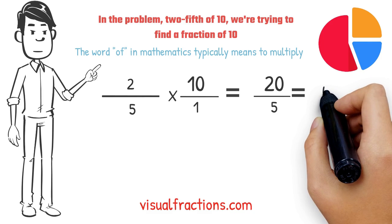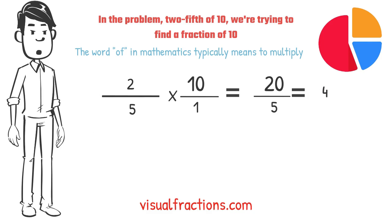So, 20 divided by 5 equals 4. And there you have it. 2 fifths of 10 is 4.